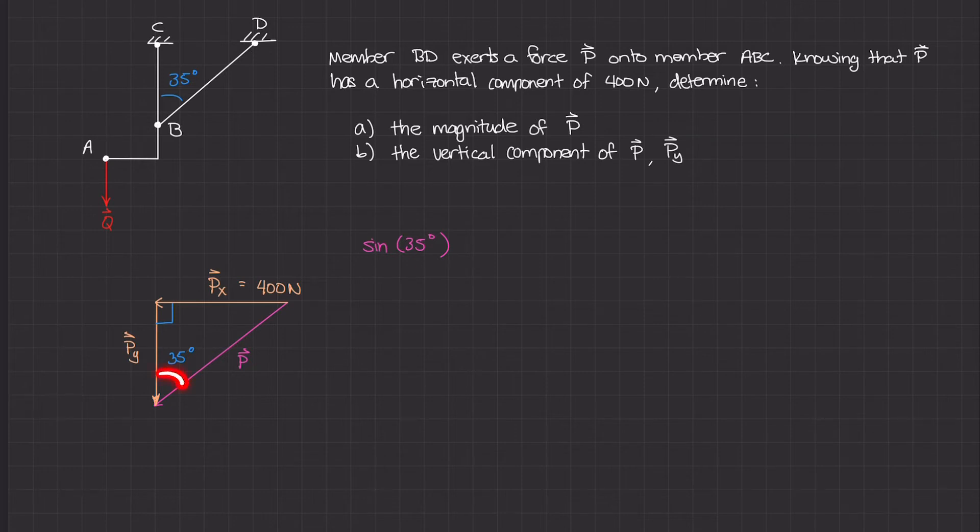The opposite side to this angle has a value of 400 newtons. So sine of 35 degrees equals P of x, which is 400 newtons, over P. Our unknown is P, but we already know Px is 400 newtons.